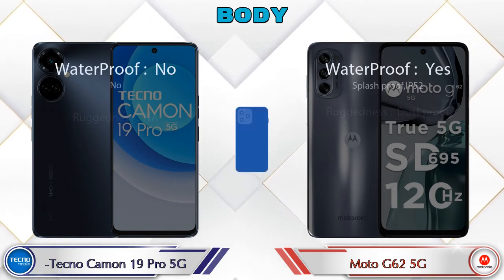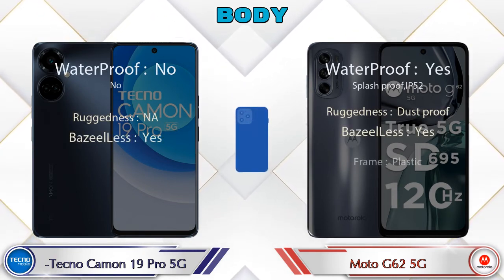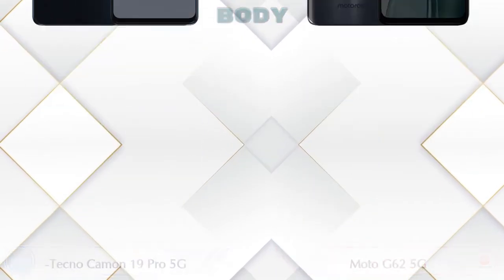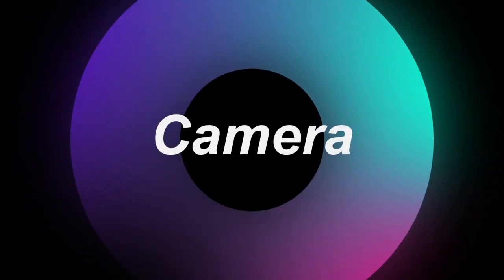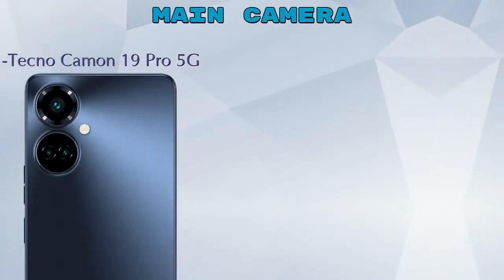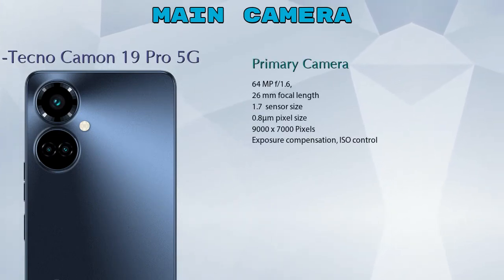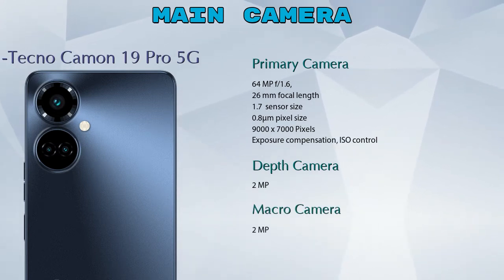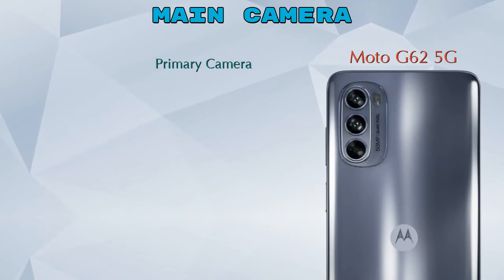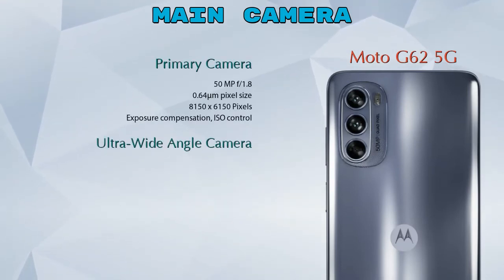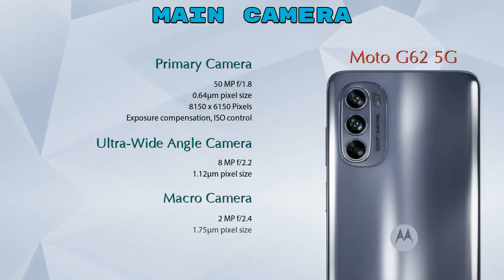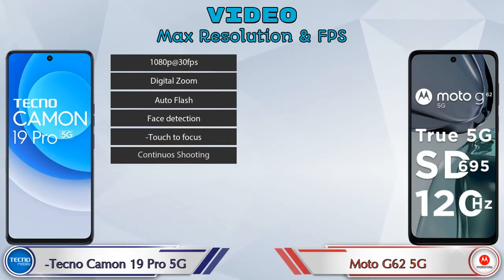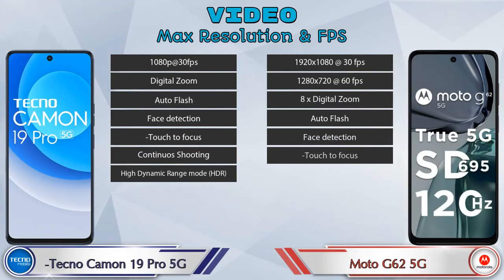Here is the complete detail of the body of both phones. Now let's look at our favorite feature: the camera. The Camon 19 Pro 5G has three rear cameras — a primary camera, a depth camera, and a macro camera. The Moto G62 5G also has three rear cameras — a primary camera, an ultra-wide angle camera, and a macro camera. For video, the Camon 19 Pro 5G has seven features and the Moto G62 5G has eight different types of features available.